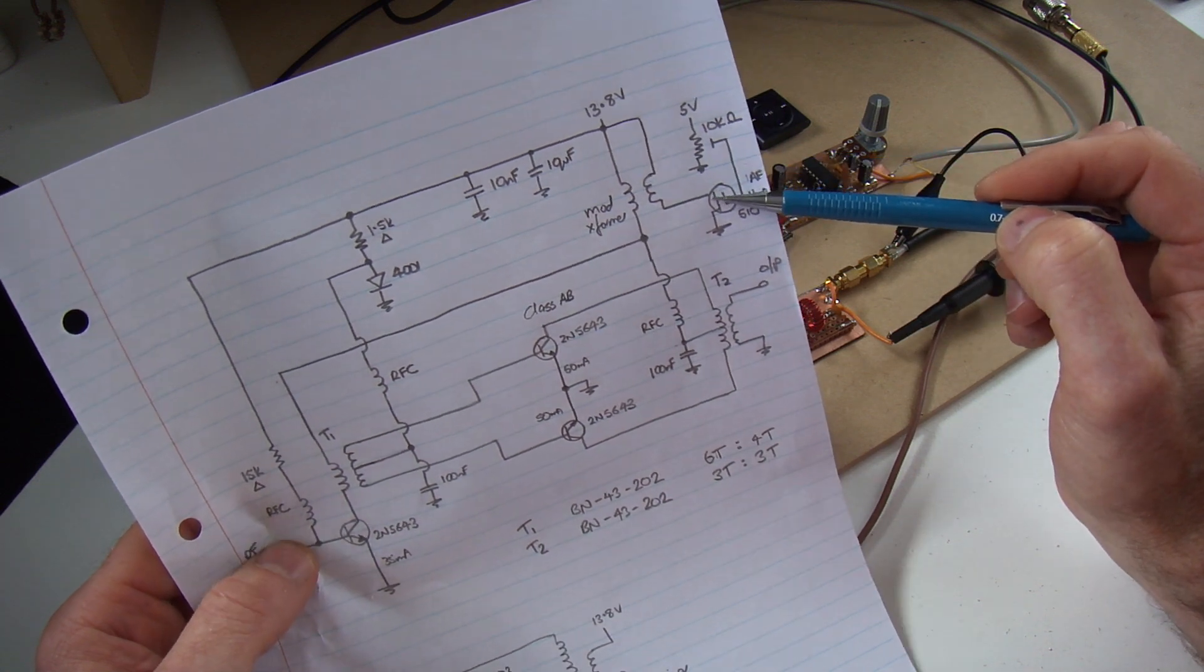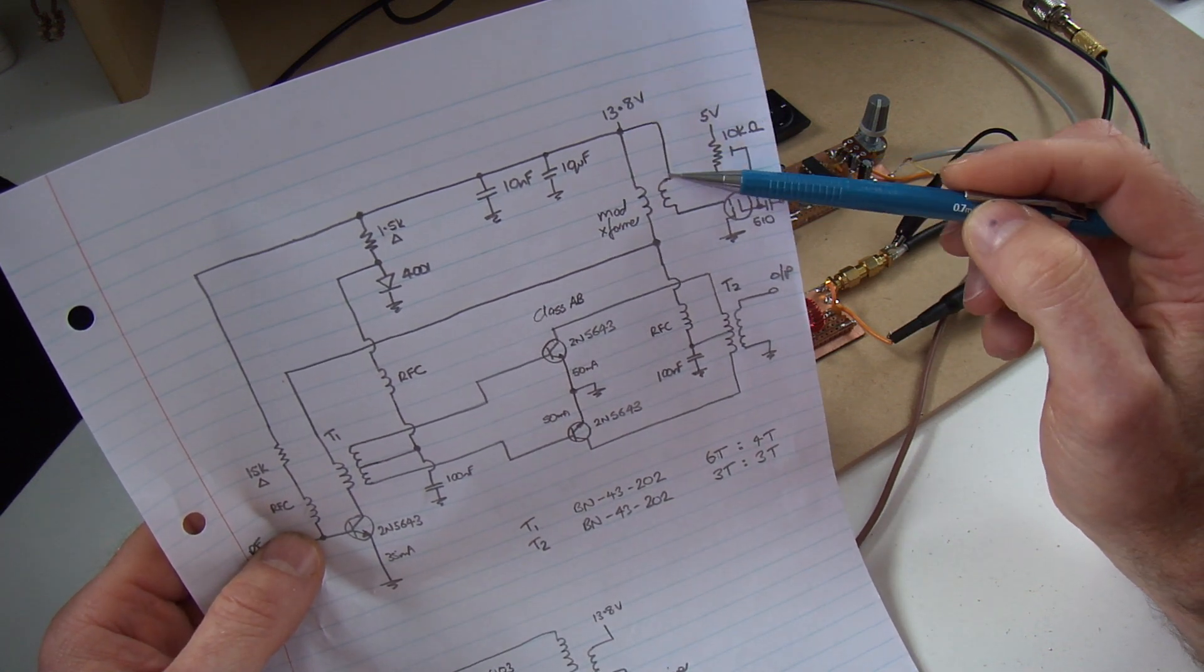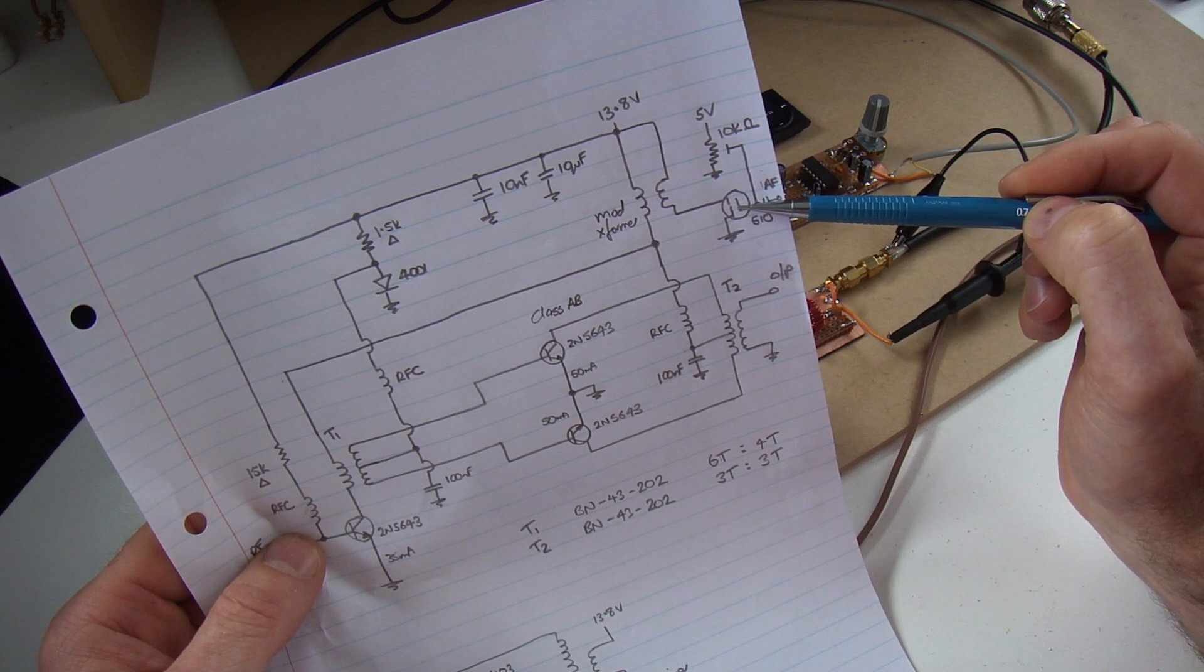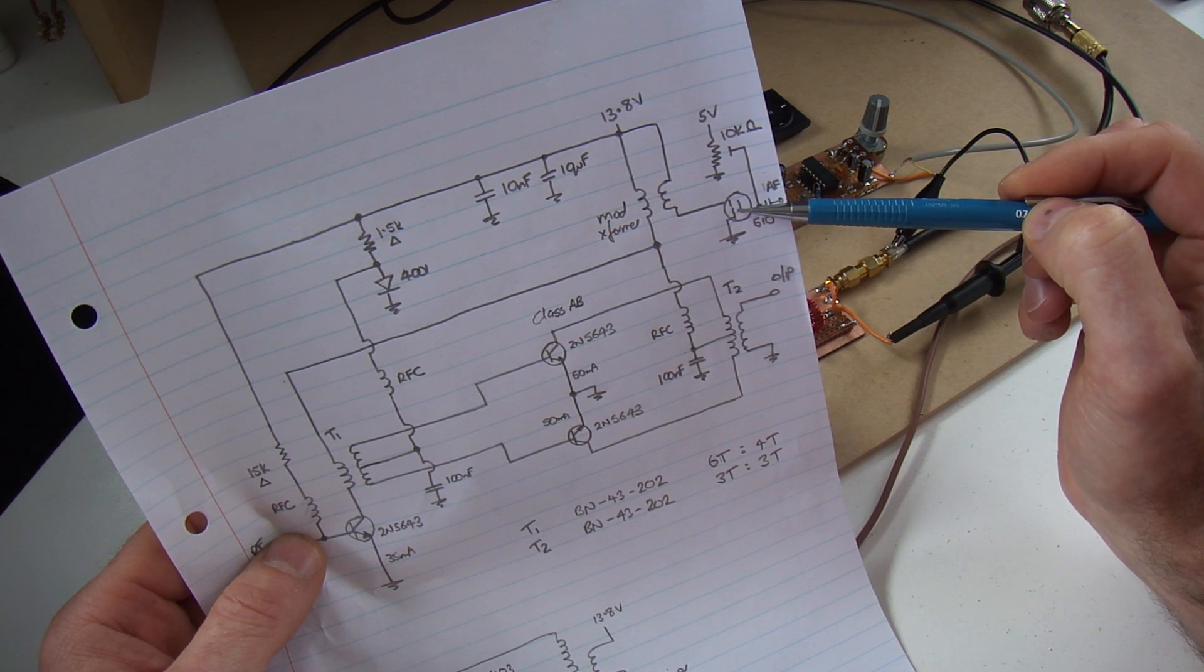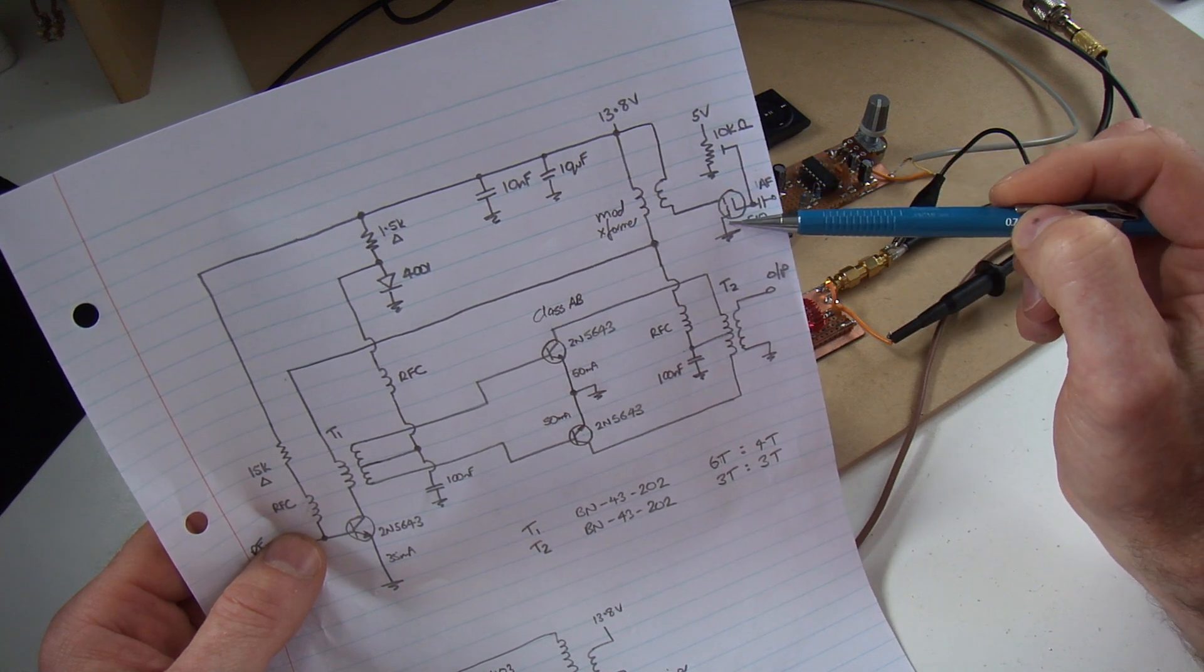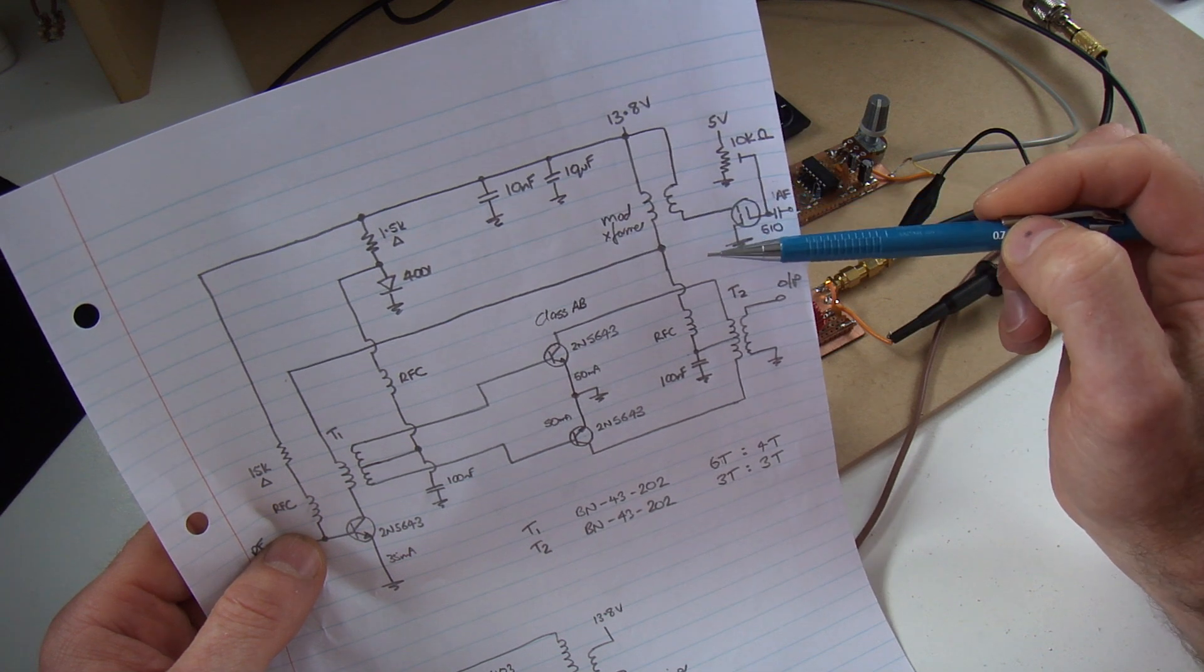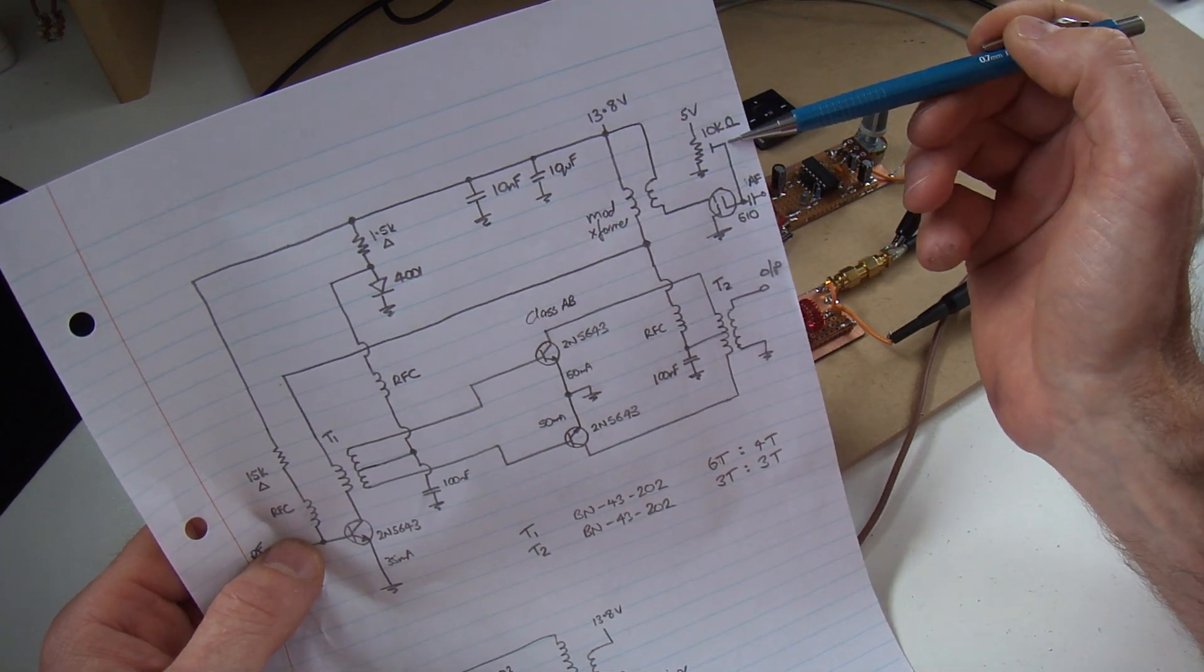This was pretty well in line with how the transformer came out of the other radio, so I was pretty comfortable with the ability to have the full or very close to the full VCC sitting right across those two windings there.